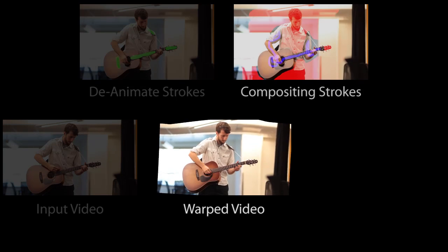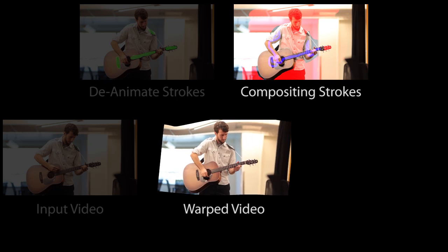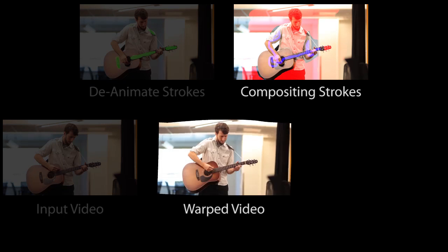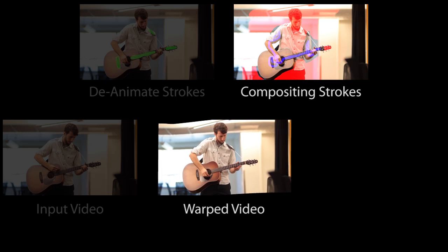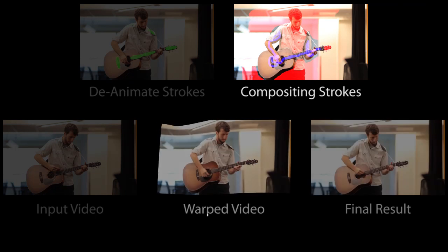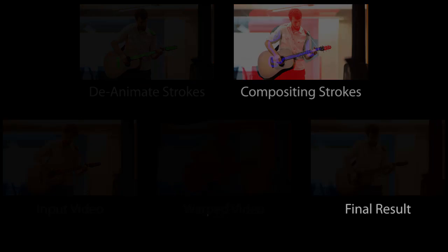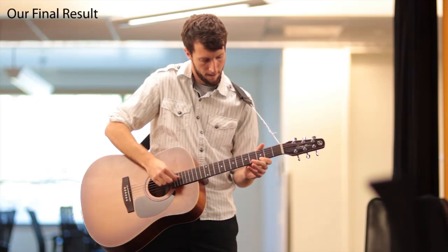The user therefore draws compositing strokes: red to indicate that the background and head should be static, and blue to indicate that the guitar and arms should be dynamic. Our method then composites the dynamic warped video with static still frames from the input video in order to respect these strokes. Here is the final result.